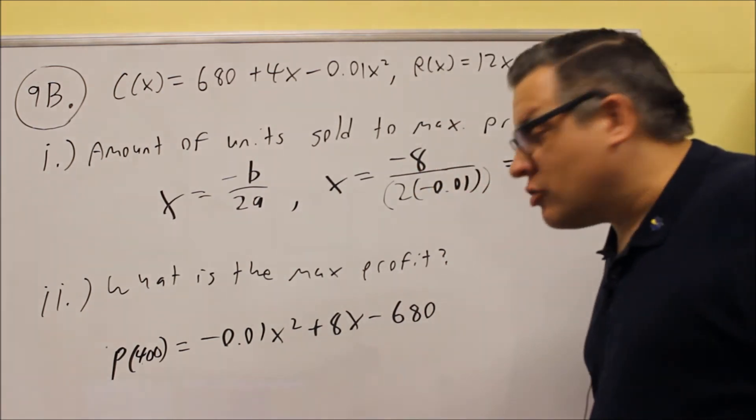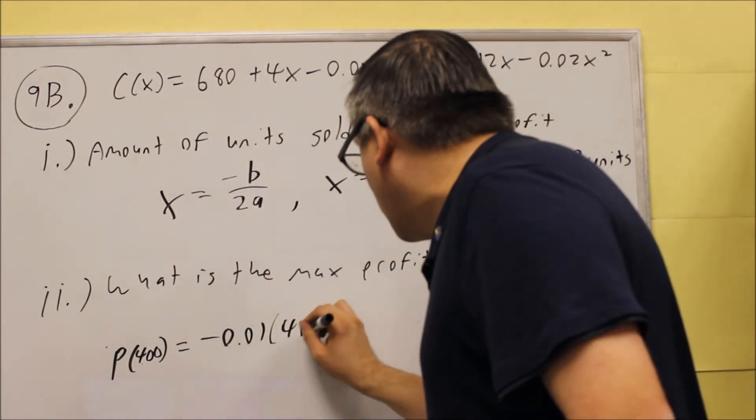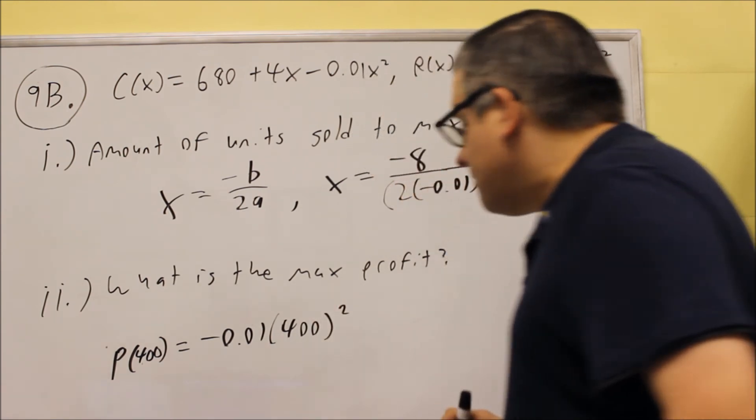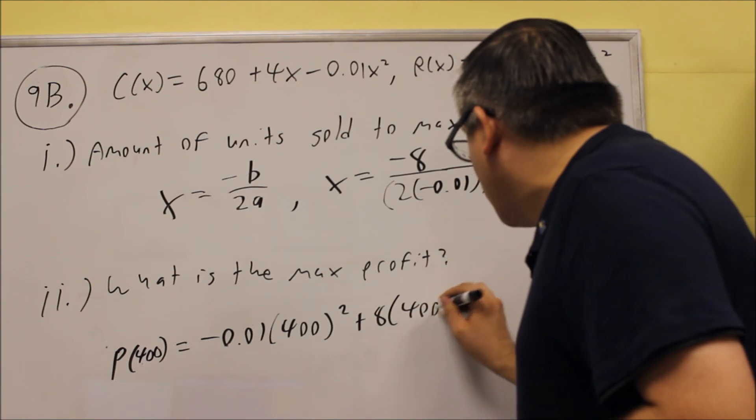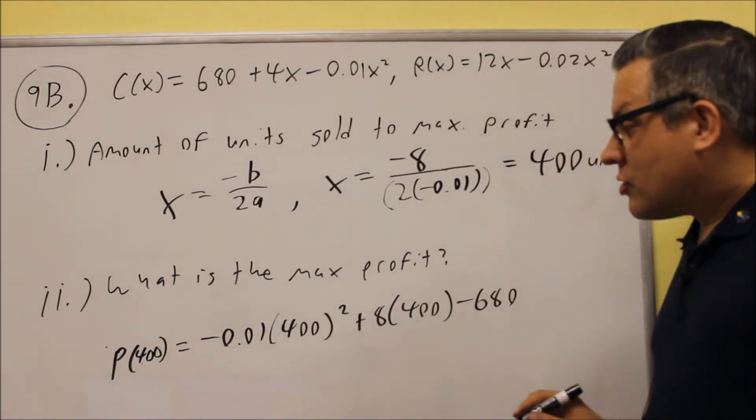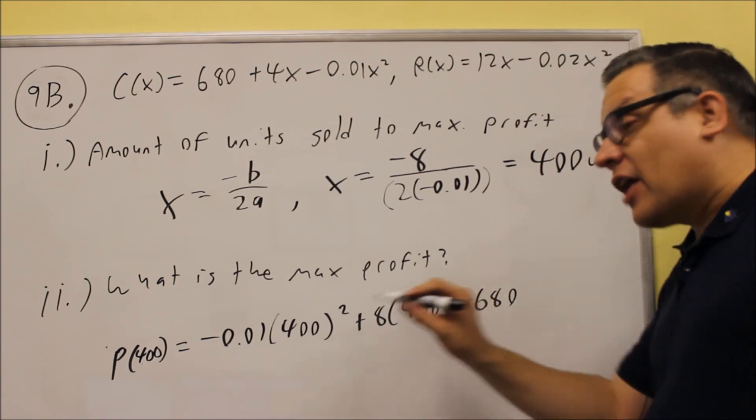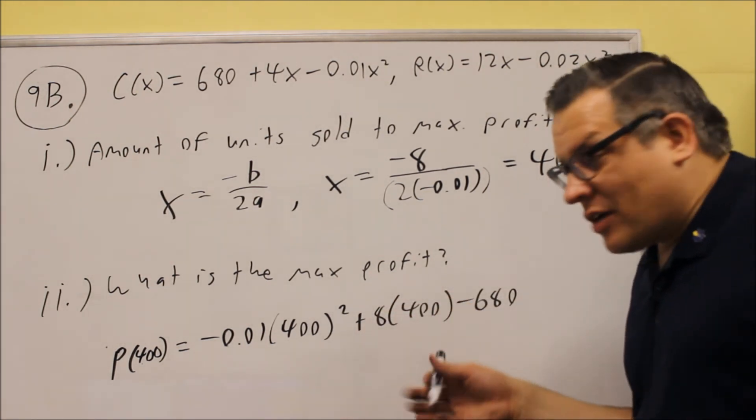That means everywhere you see an x, you replace it with 400. So it's going to look like this, negative 0.01 times 400 squared for that one. Then we have plus 8 times 400, and we have a minus 680. So this will actually give you the profit for the number of units that are produced, which is x. So putting that in: